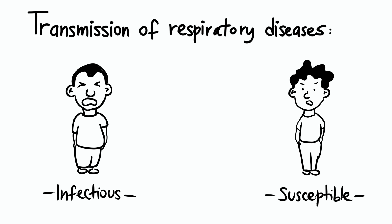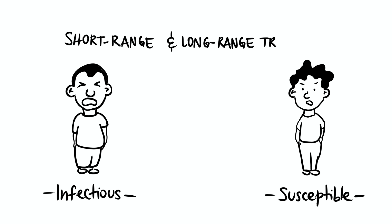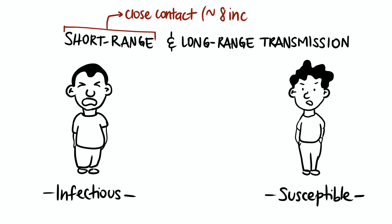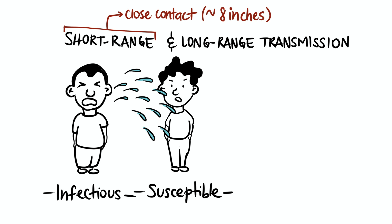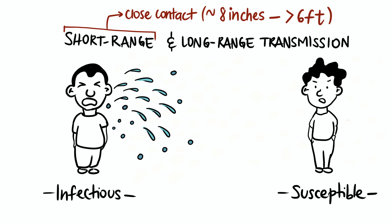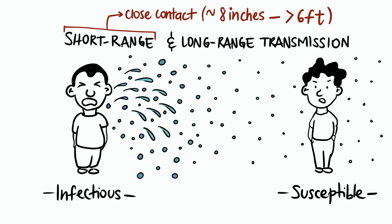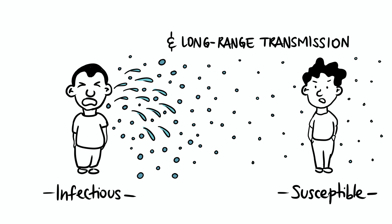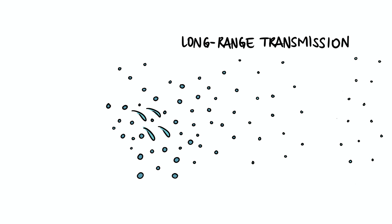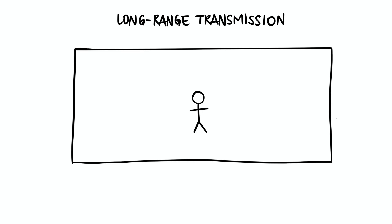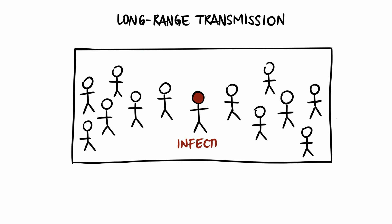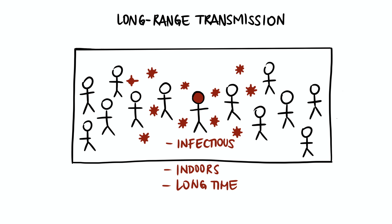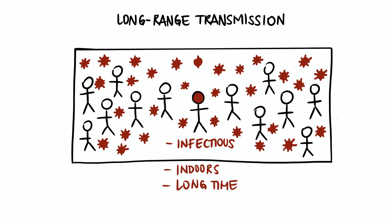To prevent infections, we must control both short-range and long-range airborne transmission. Short-range is when you happen to be in close contact. If you are as close as eight inches, you can get infected by a spray of large particles landing on your face. Between eight inches and six feet, you will inhale the virus. Long-range aerosol transmission also happens — this is how super spreading occurs, when a highly infectious person is indoors for a long time shedding lots of virus, and there are many susceptible people in the same space.